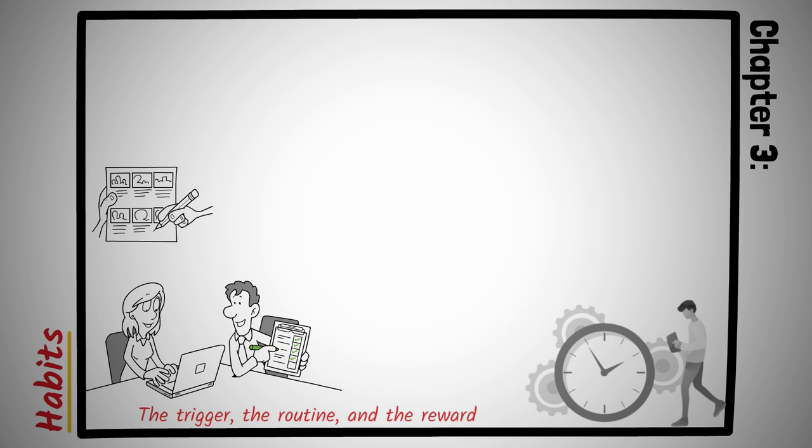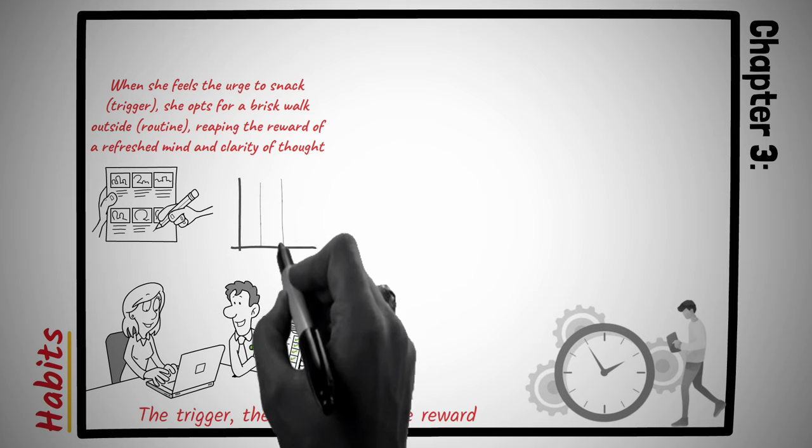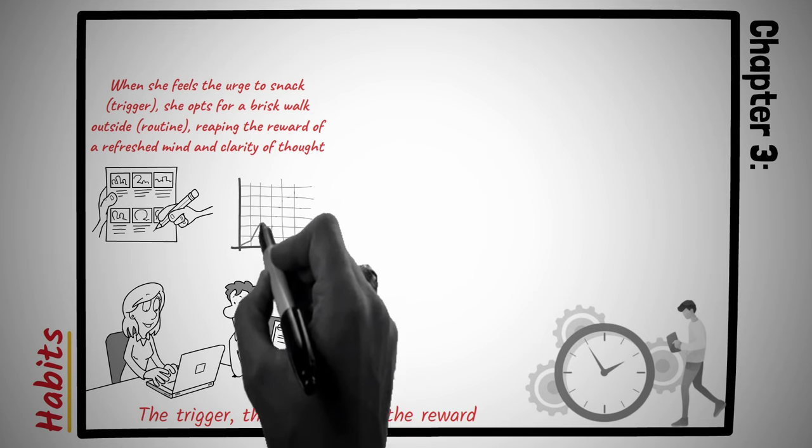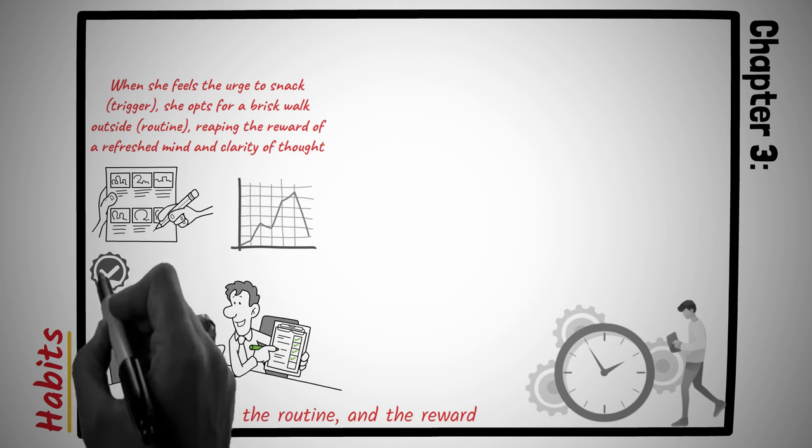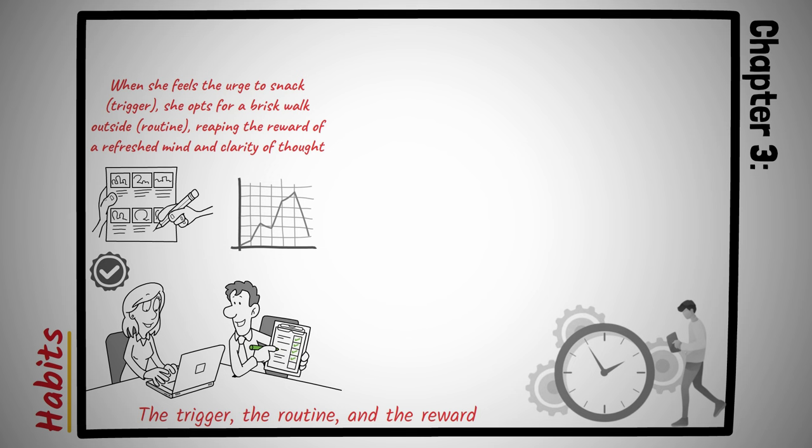Across the city, there's Sophia, another writer. She has a different post-dinner habit. When she feels the urge to snack, trigger, she opts for a brisk walk outside, routine, reaping the reward of a refreshed mind and clarity of thought. The differences in their habits lead to contrasting outcomes in their professional lives. While Thomas battles fatigue and frequent writer's block, Sophia produces consistent, quality work, and maintains a healthier lifestyle.